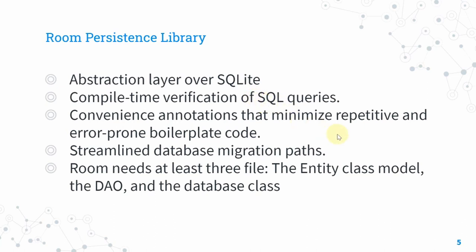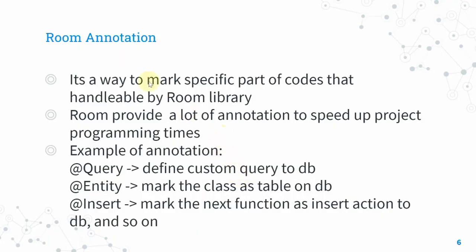Room's annotations are a way to mark specific parts of code that will be handled by the Room library during compile time and runtime. Annotations reduce verbose code by simply marking classes or functions. Room also streamlines database migration paths, allowing you to handle database upgrades from version one to version two and so on. You need at least three files: an entity class, a DAO, and a database class.